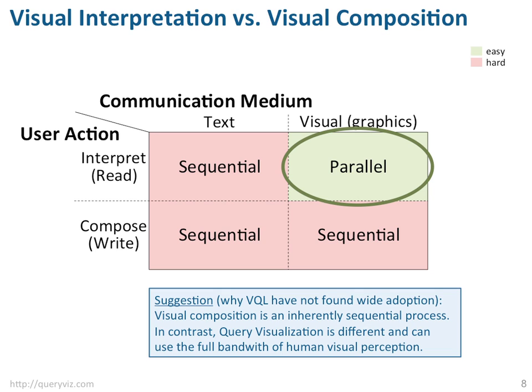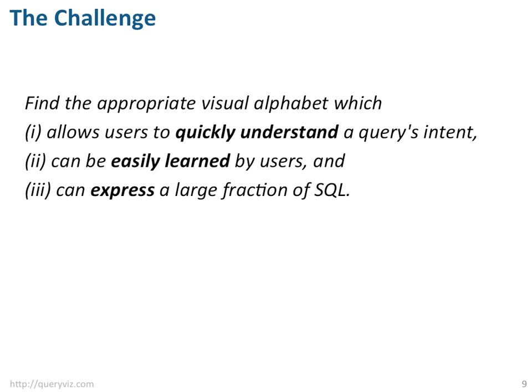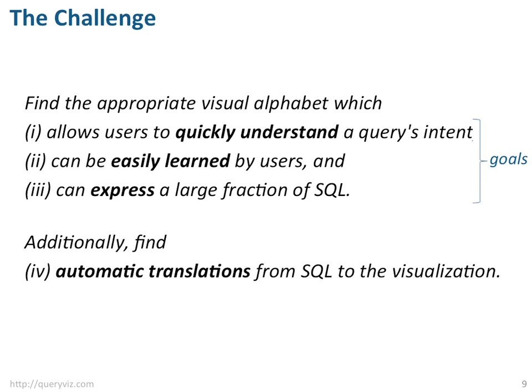Given this background, what is the challenge? The challenge for query visualization is quite similar to that of any interface language design problem: what are the right abstractions that help us achieve our goals? For query visualization that means: what is the appropriate visual alphabet which allows users to quickly understand the query's intent, which can be easily learned by users, and which can express a large fraction of SQL? In addition, we also need an automatic translation from SQL to the visualization, including a visually appealing automatic arrangement of the components.